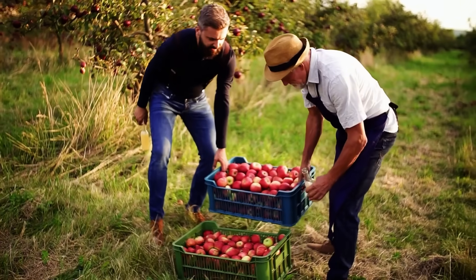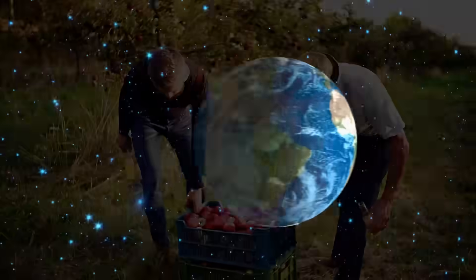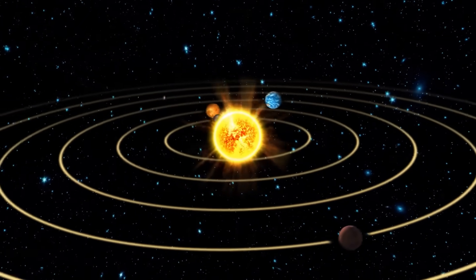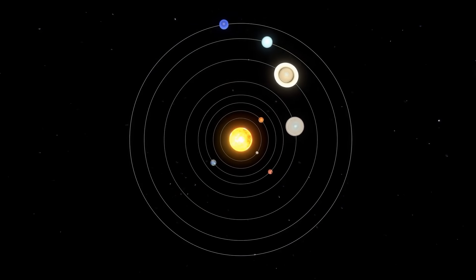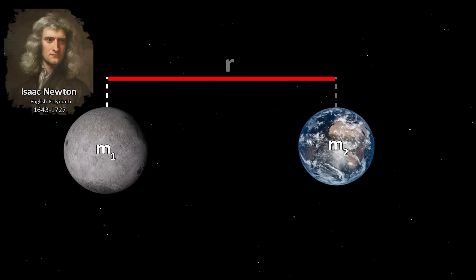We experience gravity all the time. It keeps us on the ground, makes apples fall from trees, and holds planets in orbit around the sun. But gravity doesn't work the way most people think it does. For centuries we thought of gravity as a force of attraction. Isaac Newton's law of universal gravitation told us that every object in the universe attracts every other object with a force proportional to their masses and inversely proportional to the square of their distance. The theory was simple, powerful, and incredibly accurate, so much so that it remained unchallenged for over 200 years.